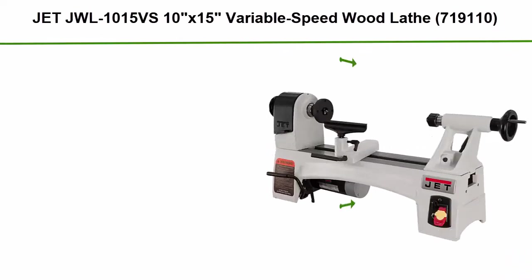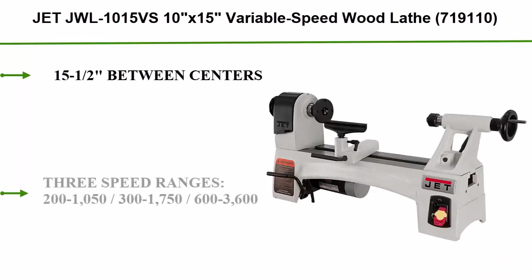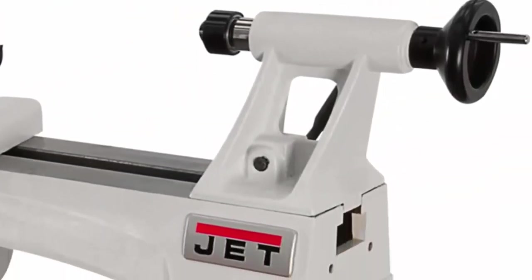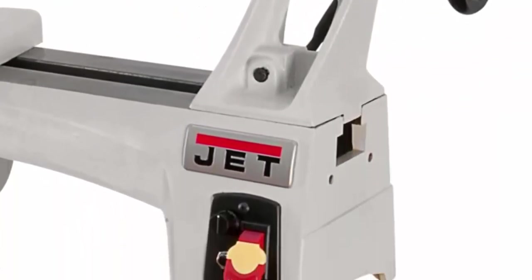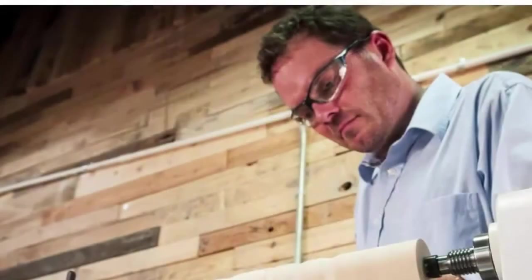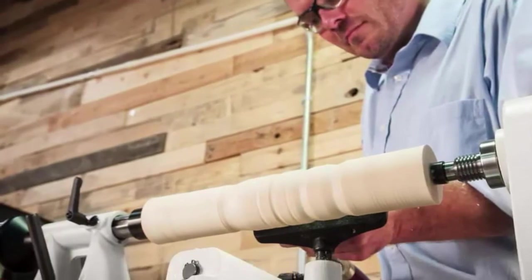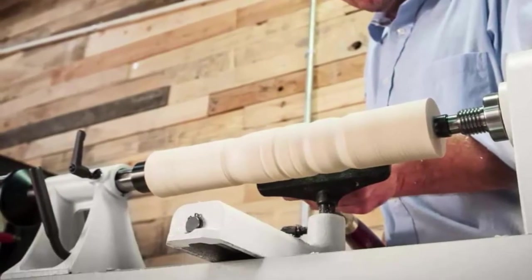Top 4: JET JWL-1015VS, 10x15 variable speed wood lathe (719110). 15 and a half inches between centers. 3 speed ranges: 200-2050, 300-1750, and 600-3600. Integrated 24-position indexing. Easy access to belts. Improved tensioning system. Increased rigidity, wider bed weights.